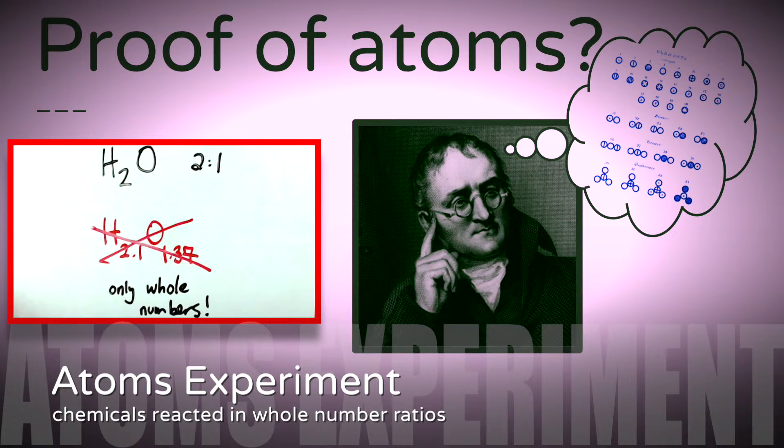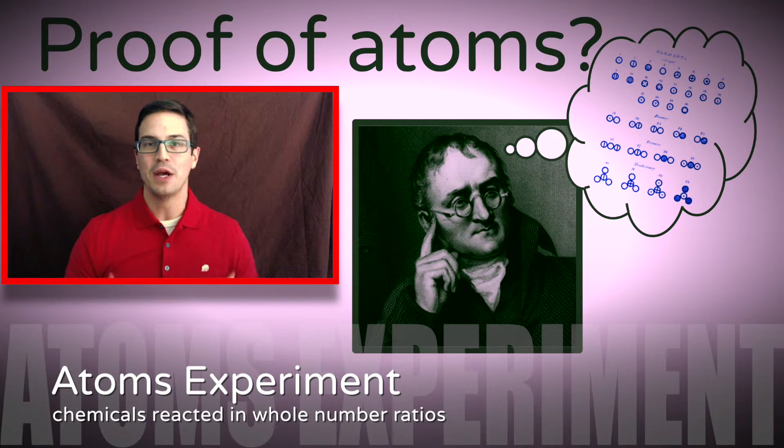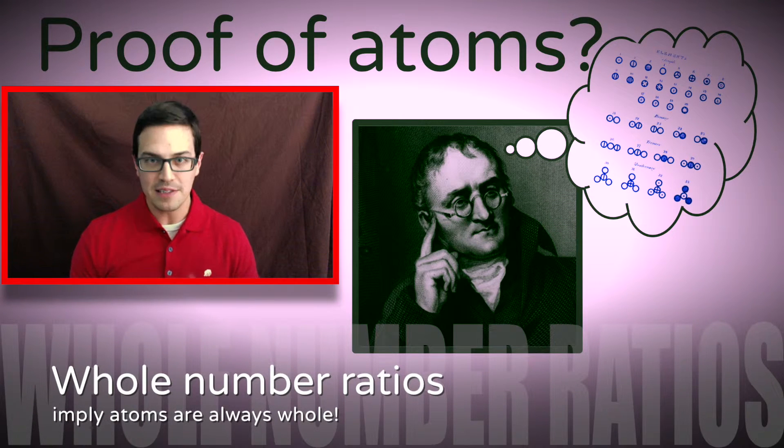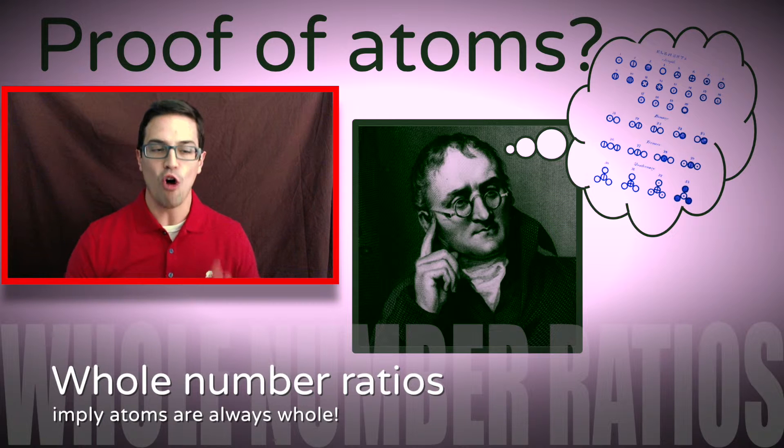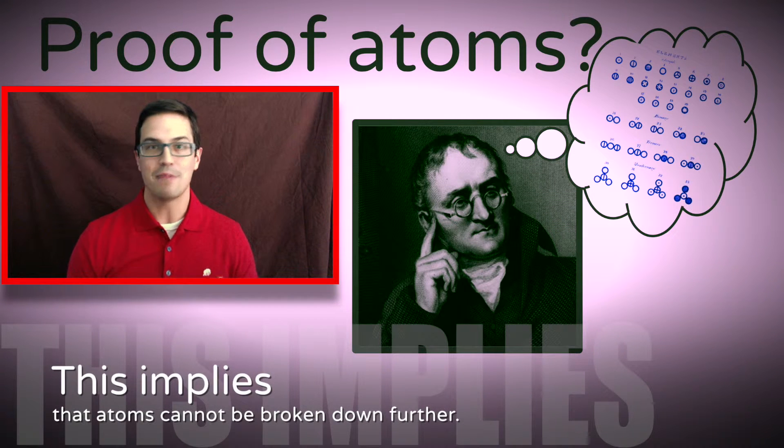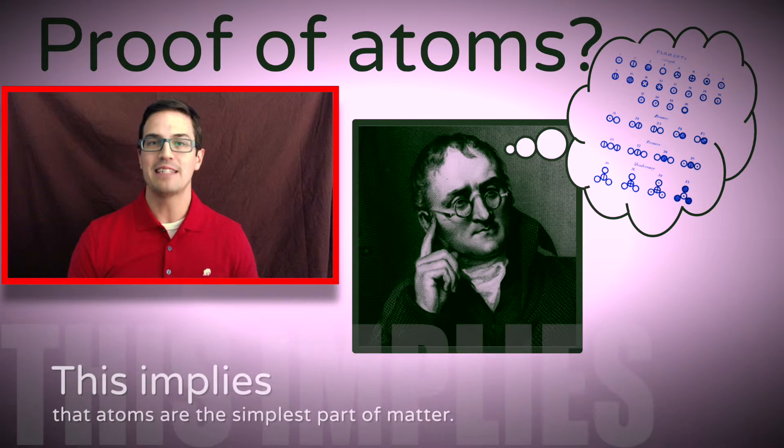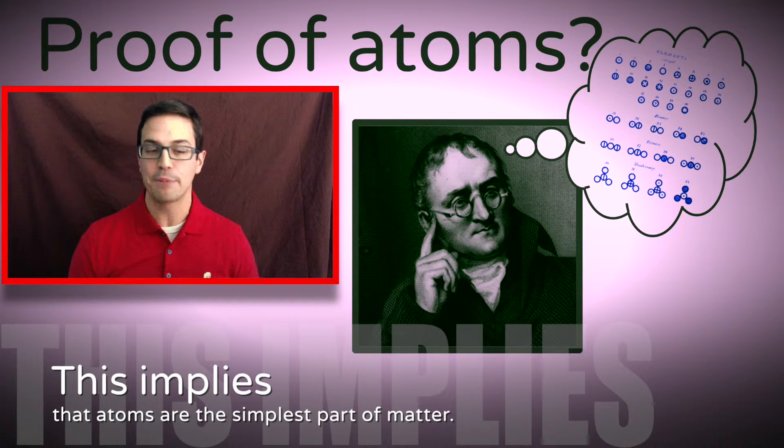Now you might be thinking, big deal. How does this prove that atoms actually exist? Well, these whole number ratios basically imply that the atoms are always whole. This implies that atoms cannot be broken down. You can't have fractional atoms. This implies that atoms are the simplest part of matter and proves that there is a limit to how far you can break down matter.